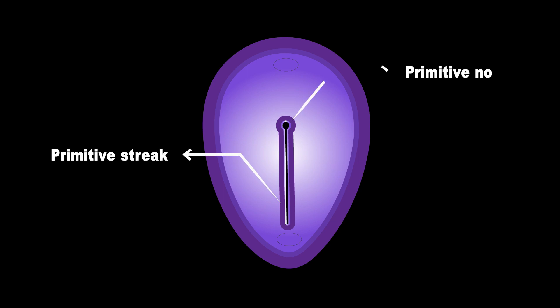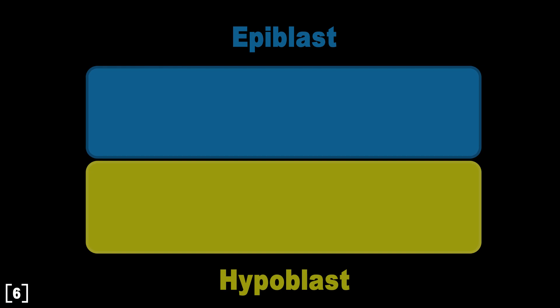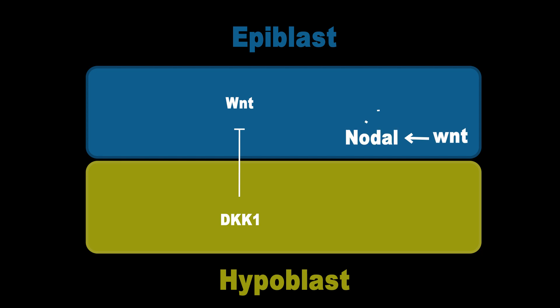The epiblast cells make these structures at the posterior side of the embryo. But how do they know that this is the posterior side? The original symmetry of the embryo breaks by the displacement of some of the hypoblast cells, called visceral endoderm, to the anterior part. This is because of the activation of DKK1 at the anterior part, which inhibits Wnt signaling at the anterior and confines it at the posterior side.